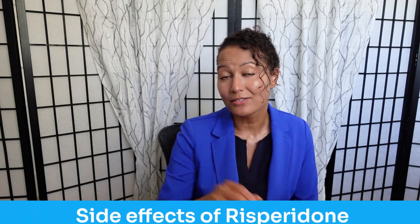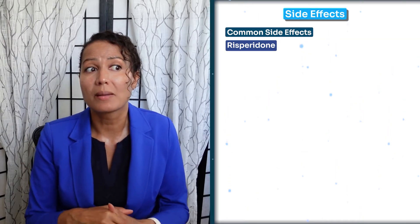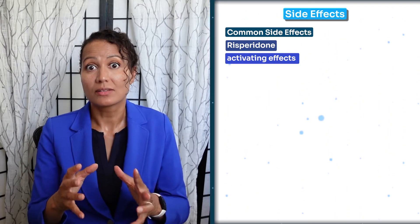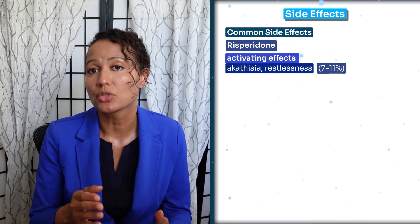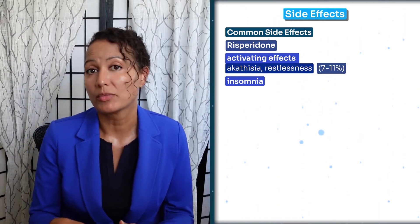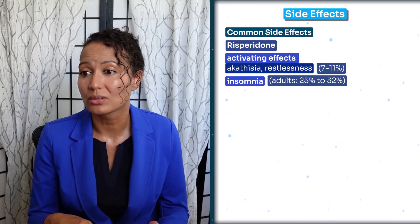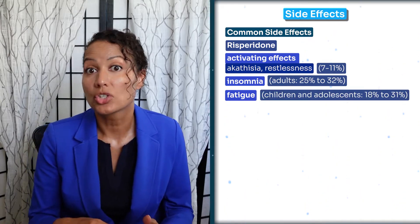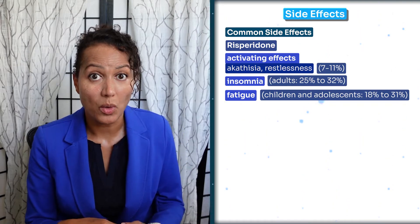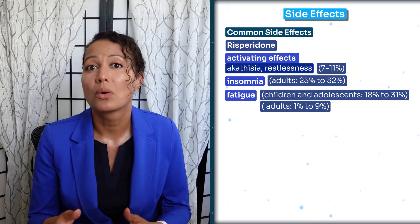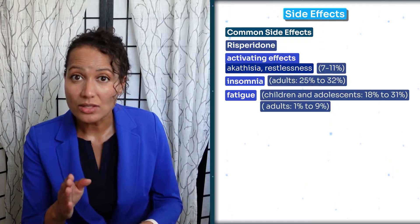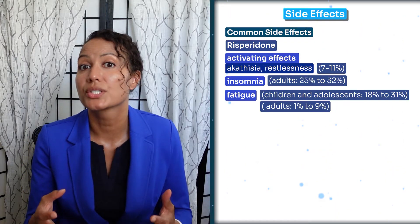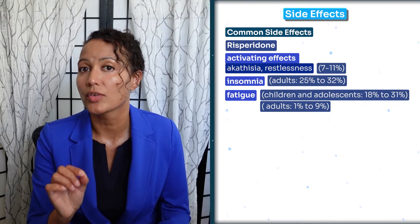Number five: what are the side effects? Common side effects with Risperidone can be activating or the opposite, causing somnolence. Activating effects such as akathisia and restlessness have been reported in 7 to 11%. Insomnia has been reported in 25 to 32% of adults. Fatigue is more common in children, seen in 18 to 31% of children versus 1 to 9% in adults. In the elderly population, it typically causes somnolence and is only given in very small micro doses.